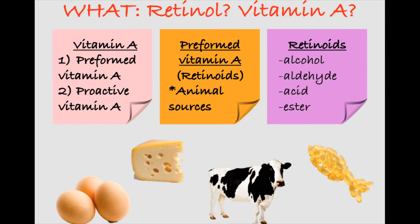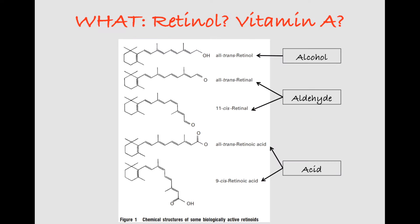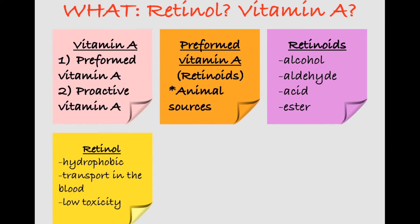The structural differences between the various retinoids allow them to carry out different metabolic and regulatory functions in the body. Retinol is the alcohol derivative of vitamin A. It's a hydrophobic molecule that is vitamin A's main mode of transport in the blood. Compared to the acid, ester, and aldehyde derivatives, retinol has a relatively low toxicity and allosterically binds to its transport protein, which is retinol binding protein 4.